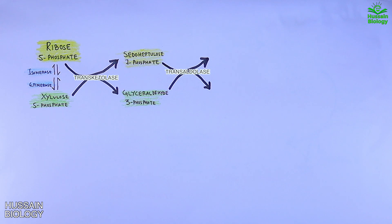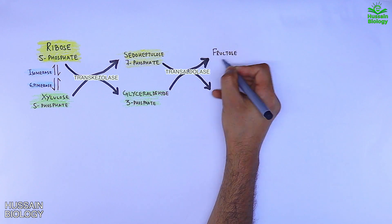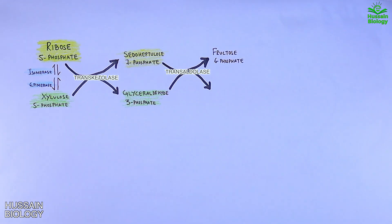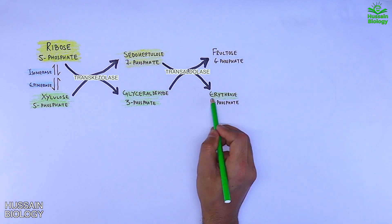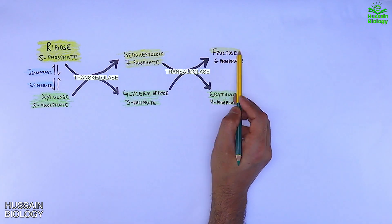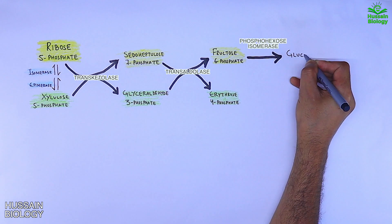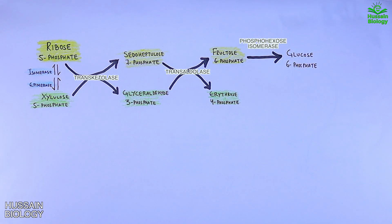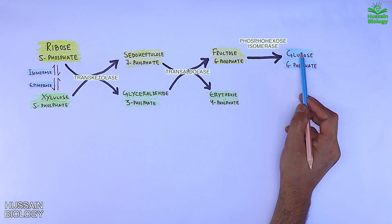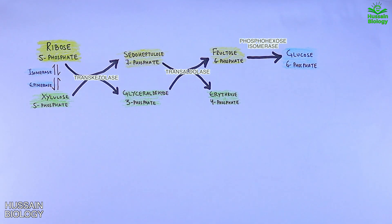Then in the next step, transaldolase enzyme acts on these formed molecules and converts them into fructose-6-phosphate and erythrose-4-phosphate. We know fructose-6-phosphate gets easily converted into glucose-6-phosphate, which is the molecule from where we started the pentose phosphate pathway, so we are back to glucose-6-phosphate.